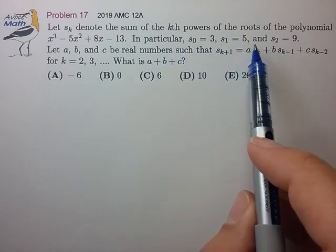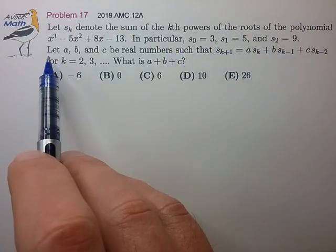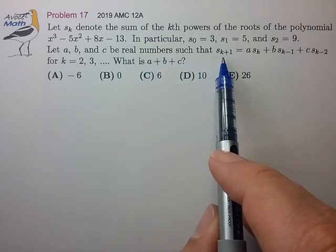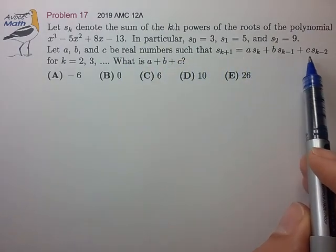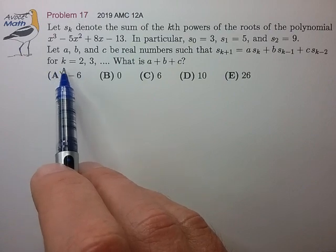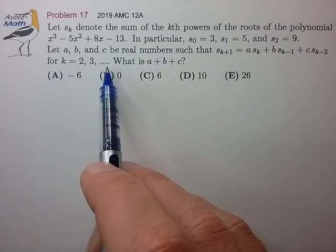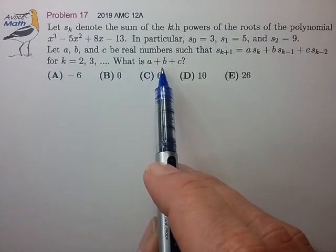s_0 is 3, s_1 is 5, s_2 is 9. And let a, b, and c be the real numbers such that s_{k+1} is given by this sum. For k of 2, 3, and so on, what is the sum a, b, and c?